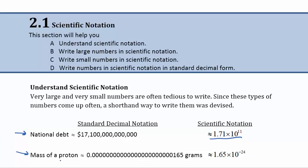Here's another example — a very small number: the mass of a proton. We have all of these zeros and then 165 grams, which is really tedious to keep track of with all those place values after the decimal. So we write that in scientific notation simply as 1.65 times 10 to the negative 24th.